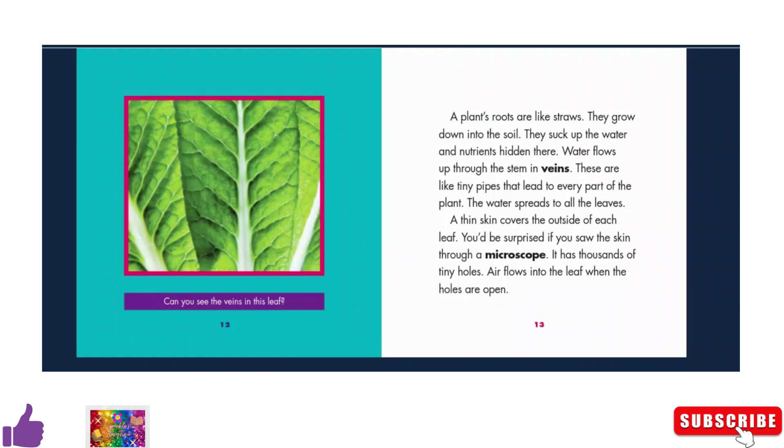Water flows up through the stem and veins. These are like tiny pipes that lead to every part of the plant. The water spreads to all the leaves. A thin skin covers the outside of each leaf.